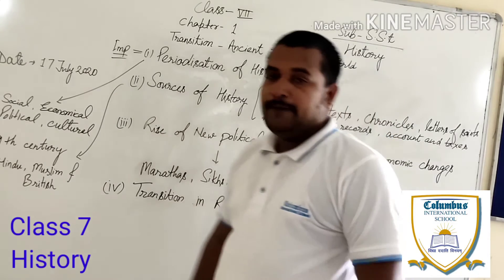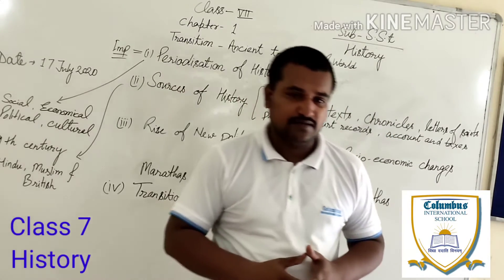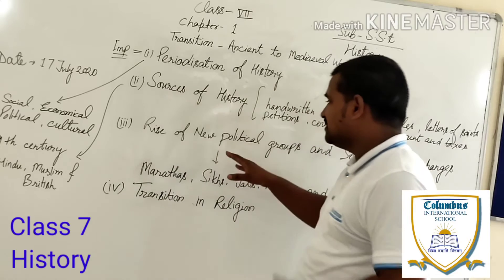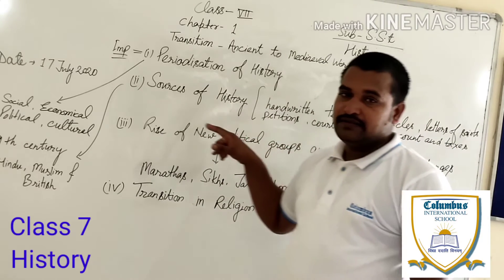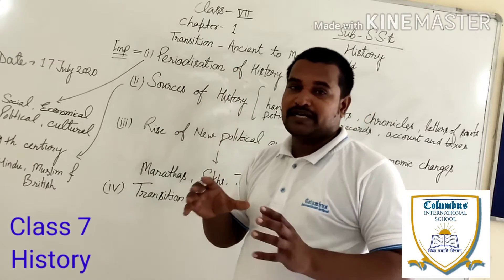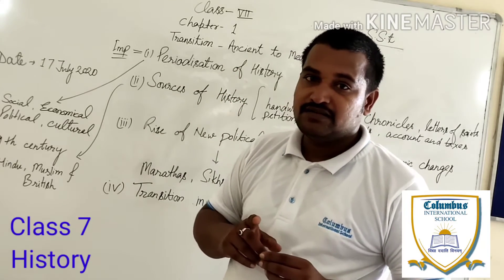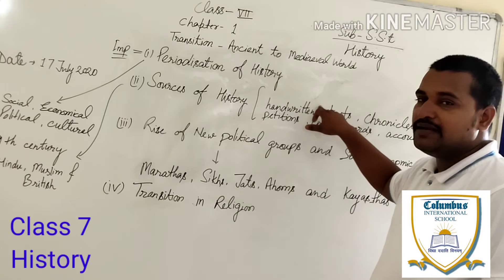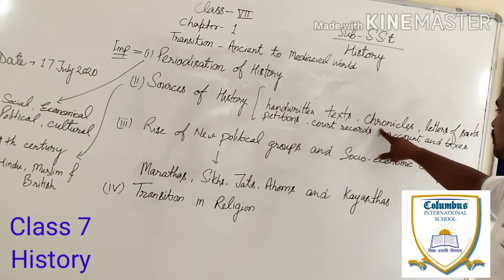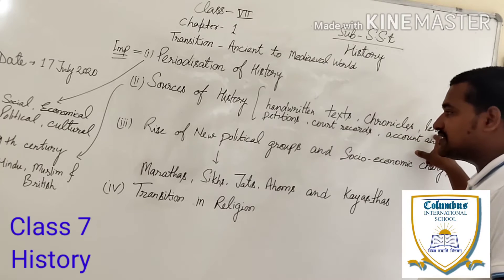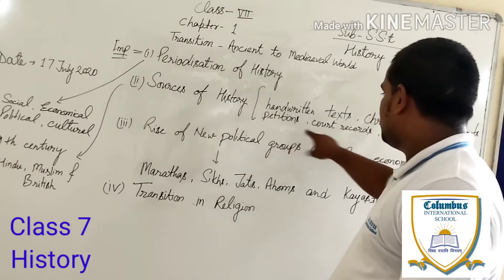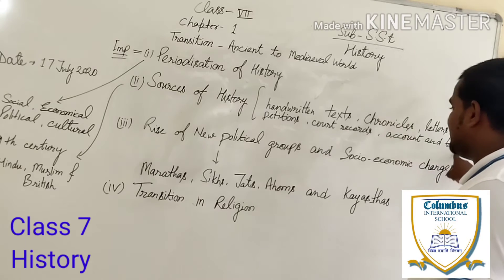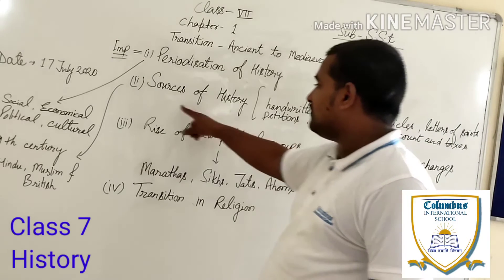Coming to the next topic: sources of history. If we are discussing any kind of historical information, we need data. This data comes from handwritten texts. In the old days, important writers like Nehaj and De Sitas wrote handwritten notes about their times. Other sources include chronologicals, letters of sense, petitions, old records, accounts and tax records, and chapters of history.